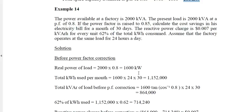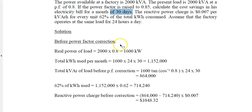Example 14: The power available in the factory is 2000 kVA. The present load is 2000 kVA with power factor 0.8. If the power factor were to be improved to 0.85, what is the cost saving in electricity bill for one month over 30 days? The reactive power charge is 0.007 cents per kVAR for every unit 62% of the kWh consumed. Assume the factory operates at the same load for 24 hours a day. Before power factor correction, the real power is 2000 times 0.8, which is 1600 kW. If used for one month, it's 1600 times 24 hours times 30 days, which equals 1.152 million kilowatt hours.